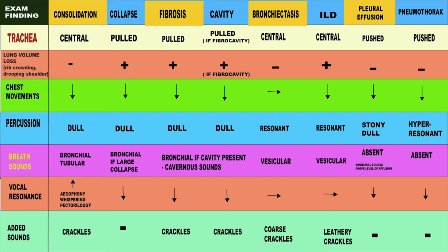Vocal resonance is increased in consolidation, and you can also hear aegophony and whispering pectoriloquy. Vocal resonance is reduced in collapse, reduced in fibrosis, and reduced in a cavity. In bronchiectasis, vocal resonance is equal. There is no change in vocal resonance in interstitial lung disease. There is reduced vocal resonance and vocal fremitus in pleural effusion and in pneumothorax.